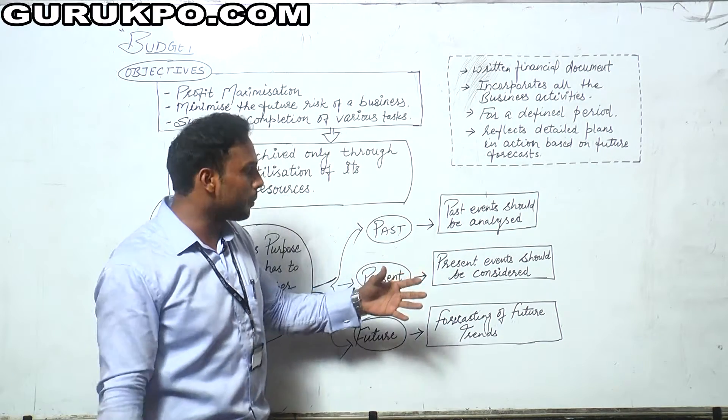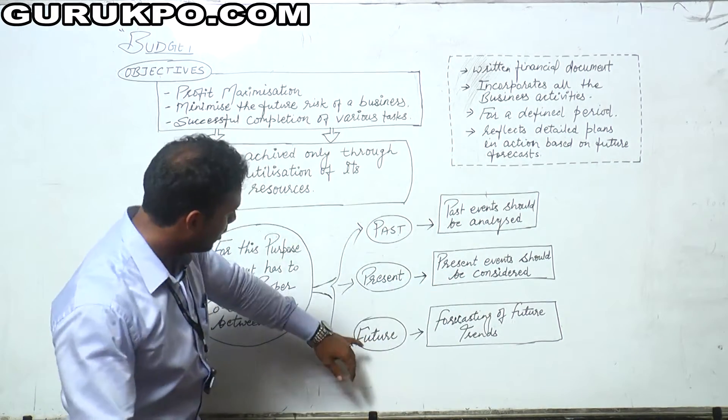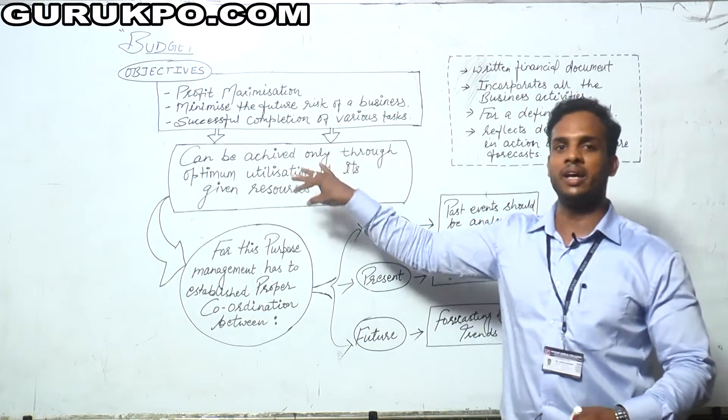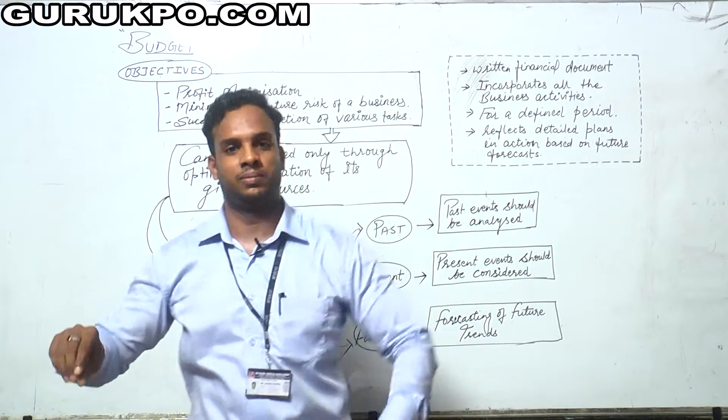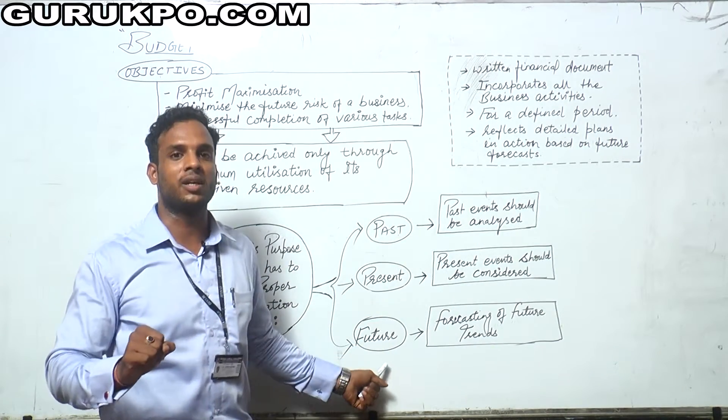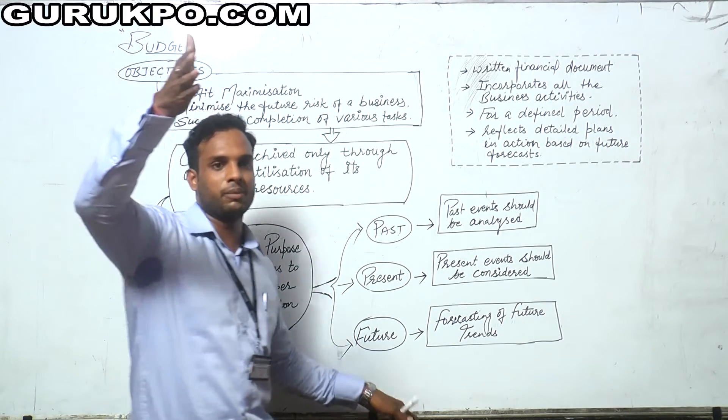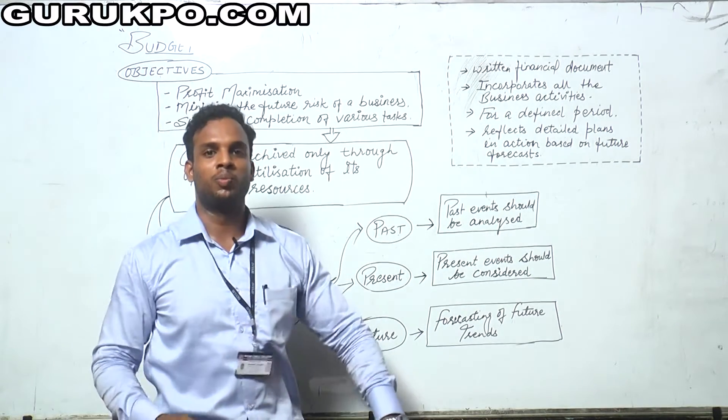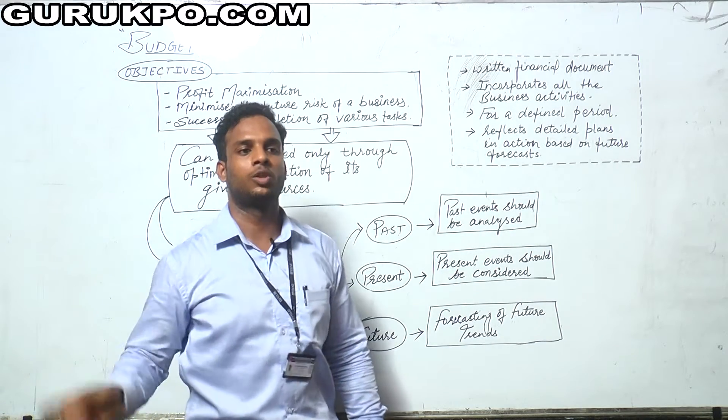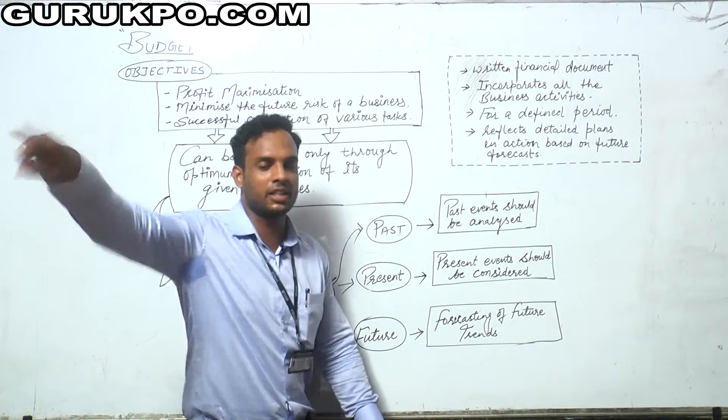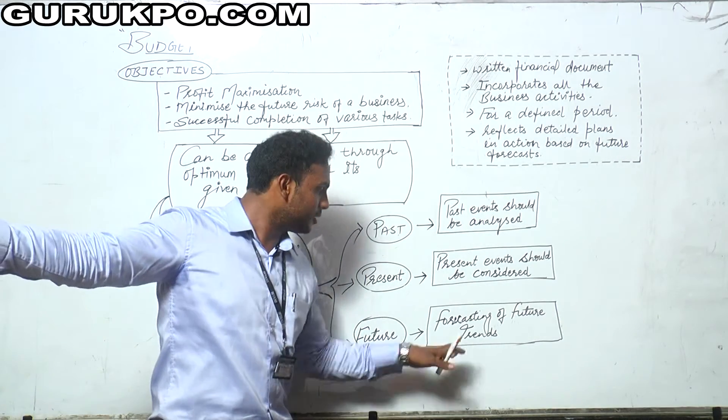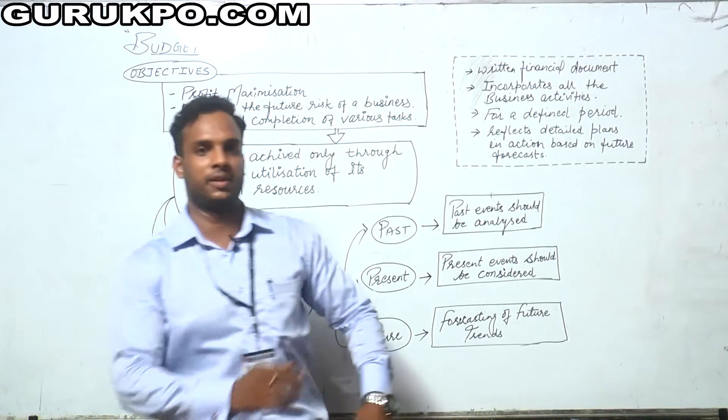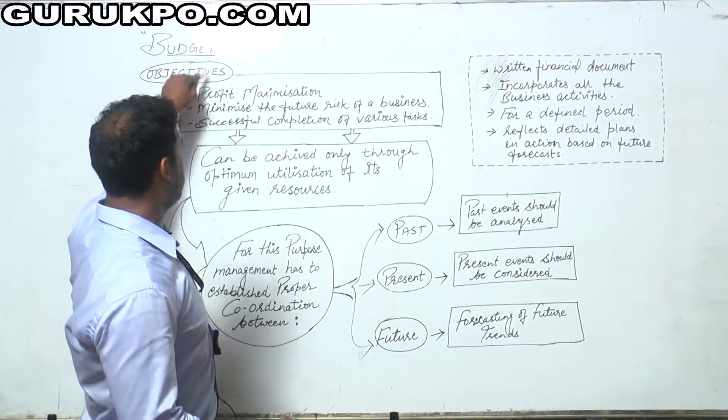And then forecasting of future trends. What you have done, what you are doing, and what you will do - past, present and future. According to this, we have to set future trends. For example, if profit was 20 percent two years ago, then 22 percent, current year 24 percent, then what should it be next year? 26 percent. And after that?